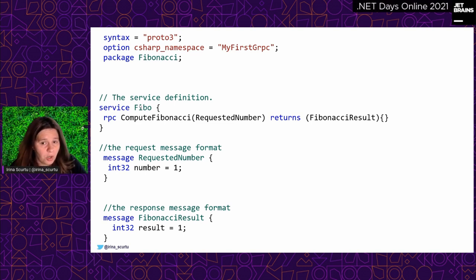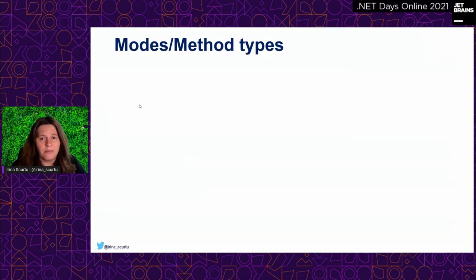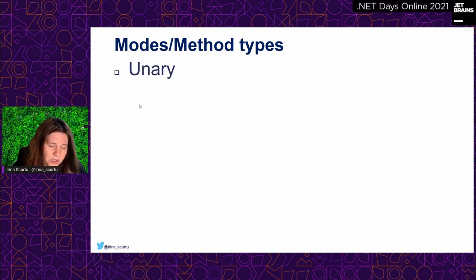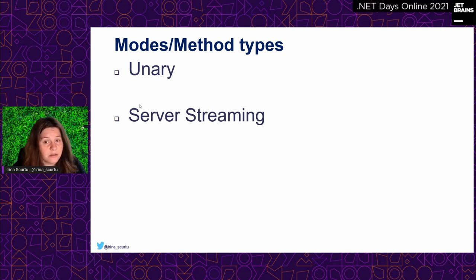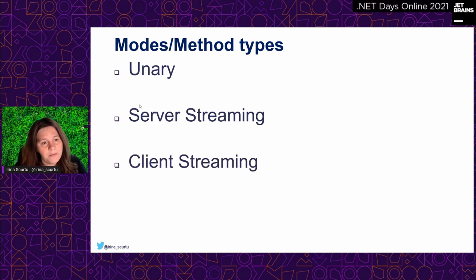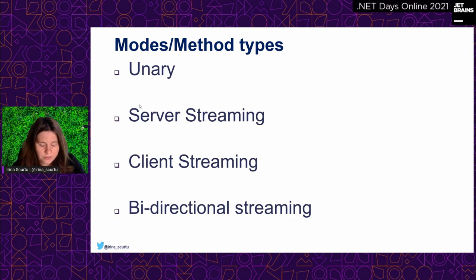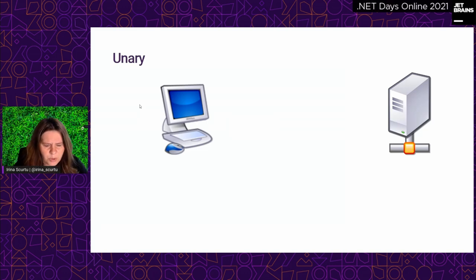Before digging into demos, we need to talk about gRPC types — also called modes or methods. The first mode is called unary, which is the classical request-response we know from HTTP or REST APIs. The second is server streaming, where the server sends several responses to the client. The third is client streaming, where the client sends several pieces of requests to the server. And the fourth is bidirectional streaming — a combination where the client sends several things in and the server responds with several things out.